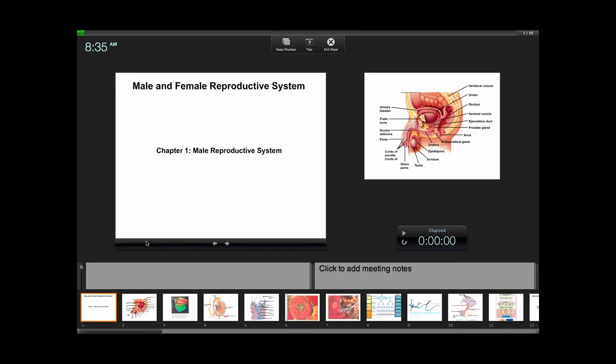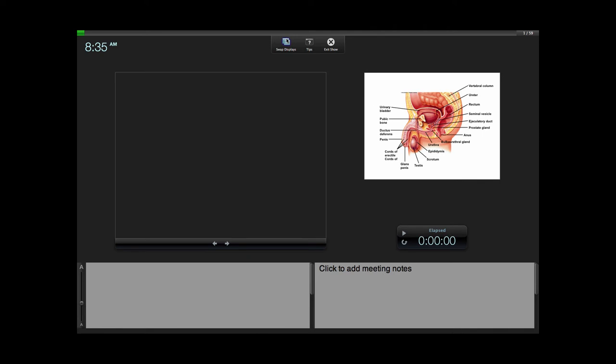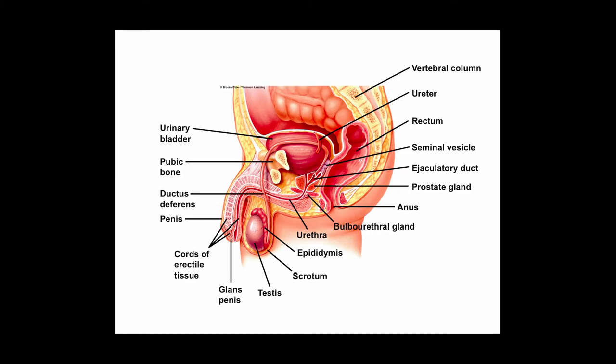We're going to talk about the reproductive system. We'll start with the male reproductive system, covering the particular aspects we need to understand as the basis for conception, fertilization, development of the embryo and fetus, and pregnancy, as well as the rest of the topics we'll cover this semester.